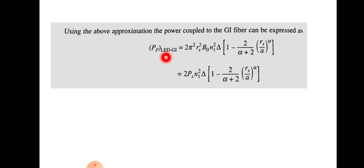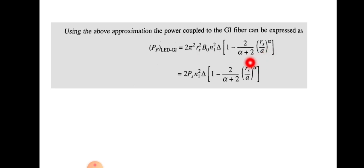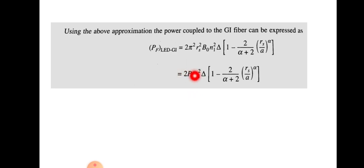For a graded index fiber, the power coupled is: PF = 2π² · rs² · B₀ · n₁² · Δ · [1 − (2/(α+2)) · (rs/a)^α], where α is the profile parameter, n₁ is the refractive index of the core, Δ is the relative refractive index, Ps is the power emitted from the source, and a is the radius of the core.